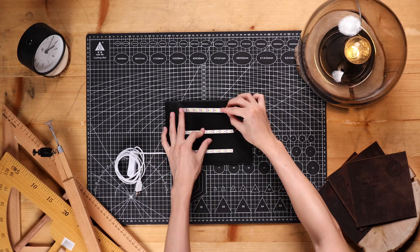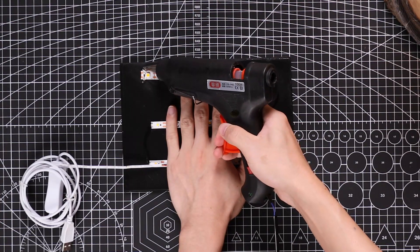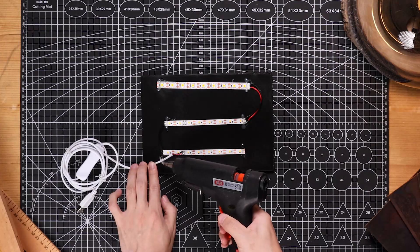Stick the LED strips to the back panel with some hot melt glue. And fix the cable to the corner.